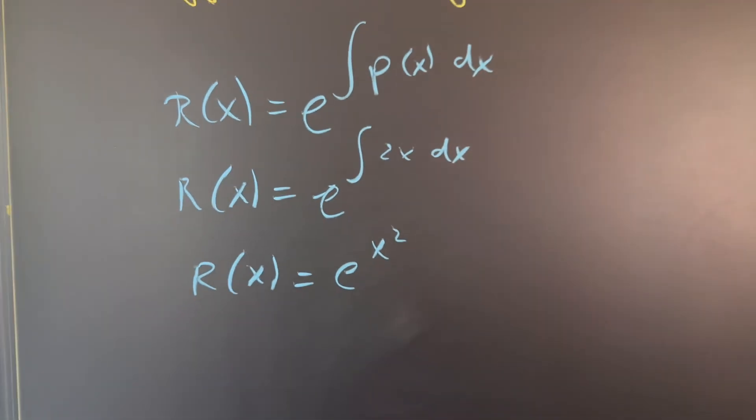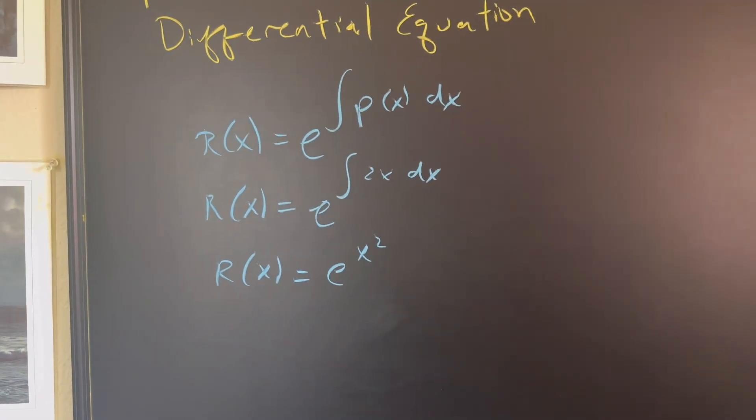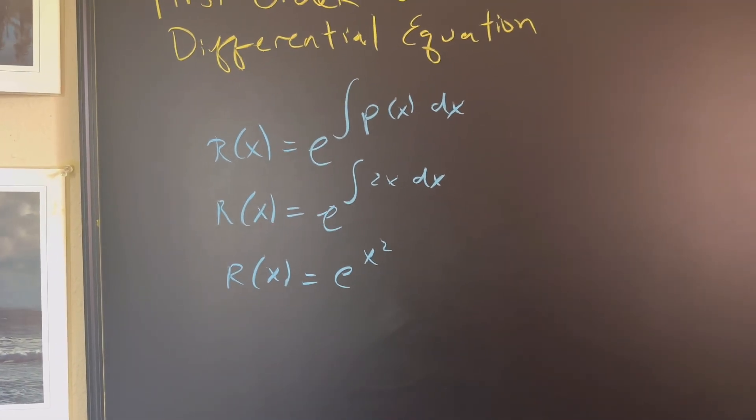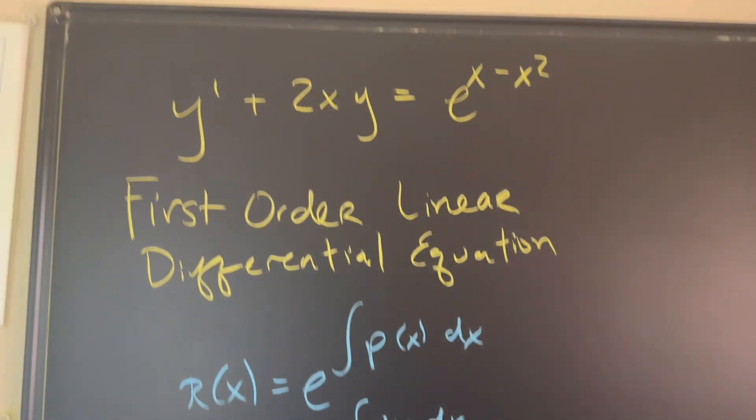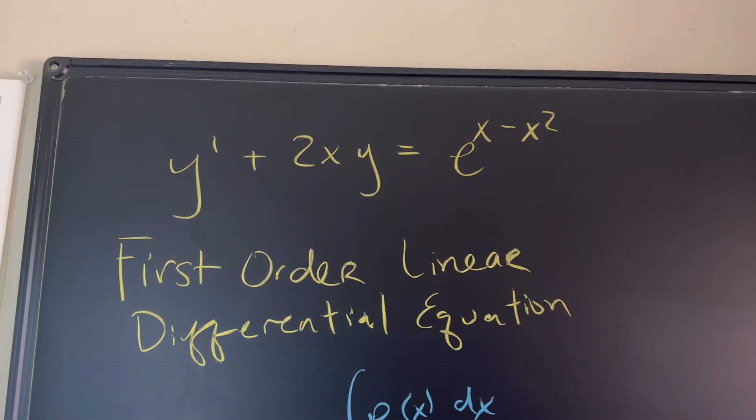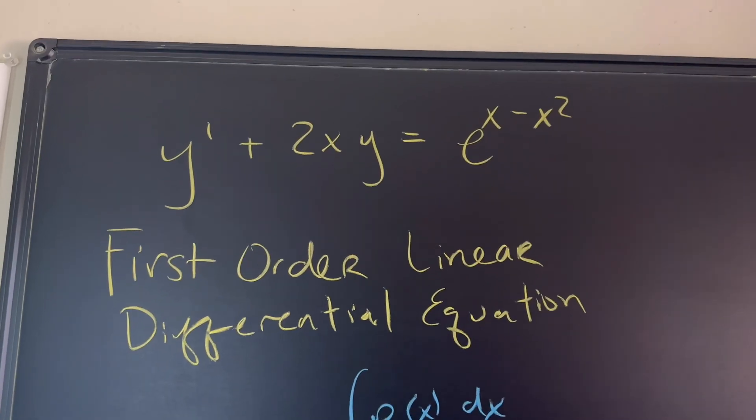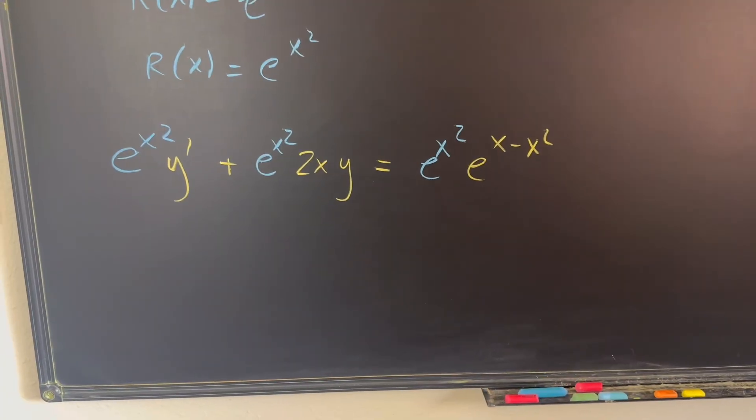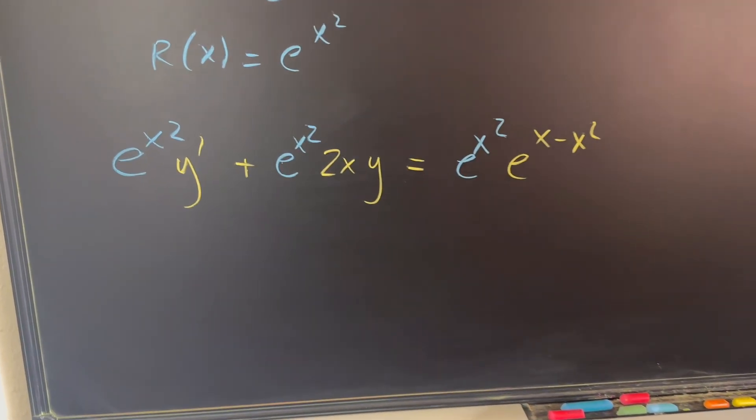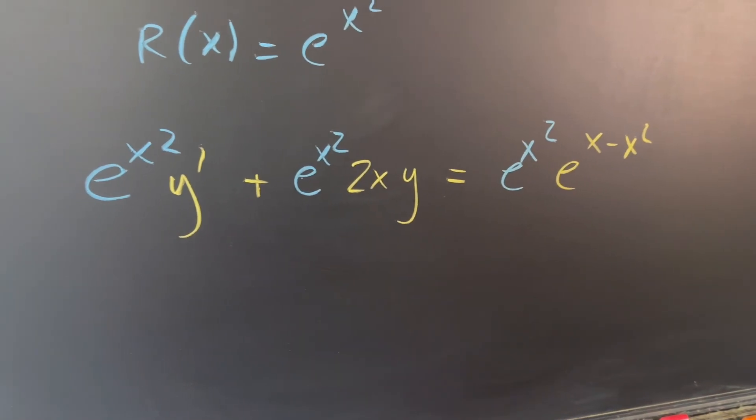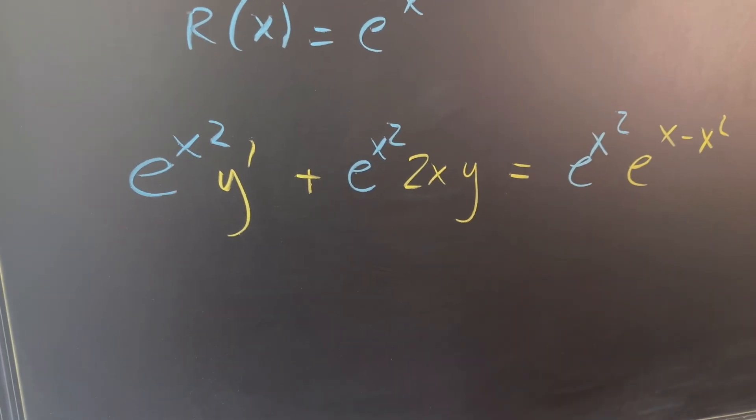Don't forget to not put a plus c here; it's not going to be needed. The math basically takes care of itself. We're going to multiply e to the power of x squared to everything, to each term on the left and the right-hand side. As I mentioned, I keep talking about the left-hand side being a product rule, and that's exactly what it is.